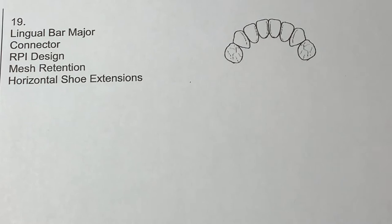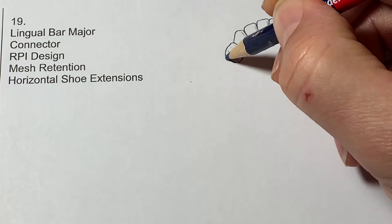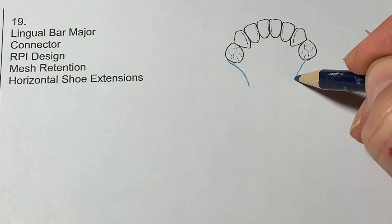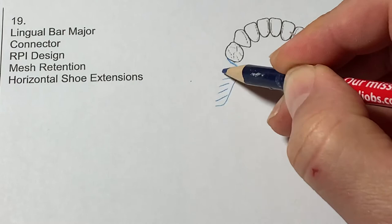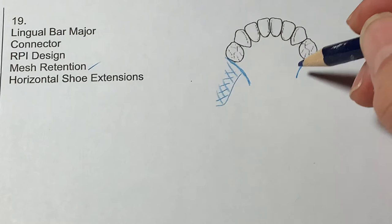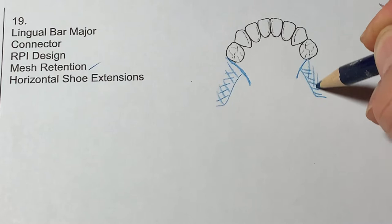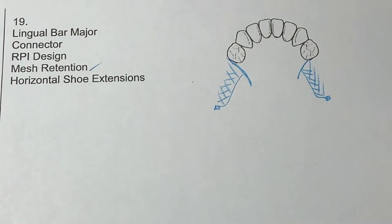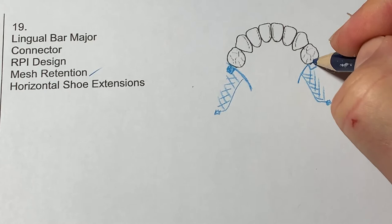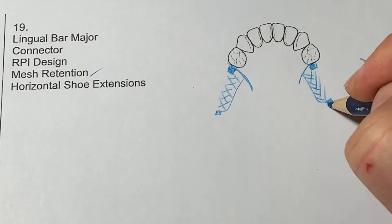Drawing number 19, we touched on briefly last week. And the first thing I'm going to do when I'm designing any cast partial denture design is to outline the dentureless areas first. Now on a lower, that external finishing line comes straight down from the guide plane. And then we're going to have mesh retention to adhere the denture-base plastic to the partial denture frame with a couple of tissue stops. This particular prescription is asking for some horizontal shoe extensions, which we can do in these metal tissue stops adjacent to the guide plane.